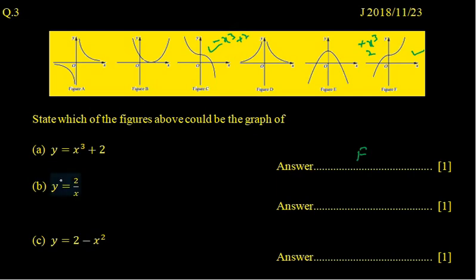Now 2 upon x, the variable x is in the denominator. So y equals 2 upon x is the graph A.